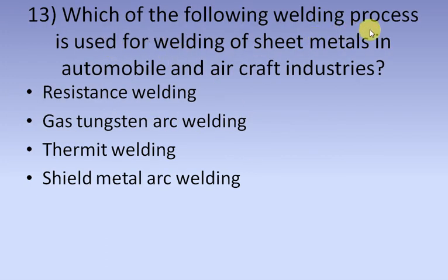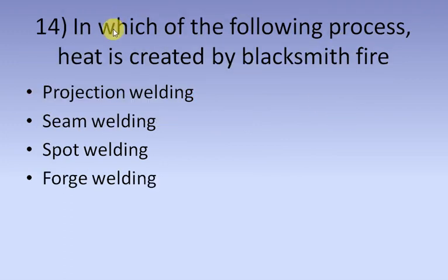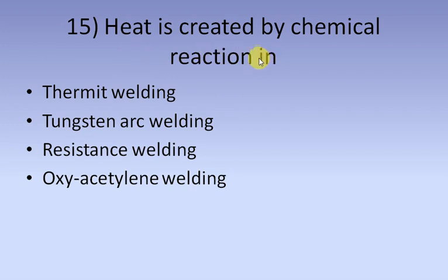Which welding process is used for welding sheet metals in automobiles and aircraft industries? It is resistance welding. In which process is heat created by blacksmith fire? It is forge welding. Heat is created by chemical reaction in thermite welding.